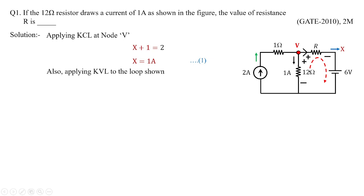Applying KVL: minus 12×1, that is −12 volts, plus R×X (where X=1), plus 6 equals 0. With this, the value of resistance R is obtained as 6 ohms. These tricky problems are allotted 2 marks — there is a complete chance you may make a mistake, and this is how questions are posed in a tricky way for seemingly simple problems.